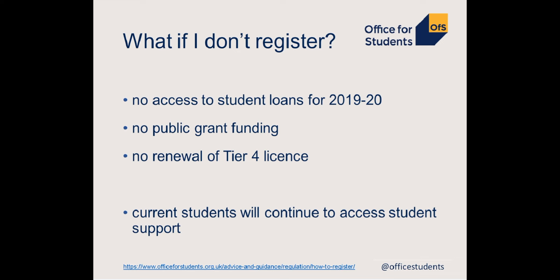What are the consequences if you choose not to register? From 2019-20, none of your students will be able to access student loans. You as a provider will not be able to access public grant funding or renew your Tier 4 licence. If you choose not to register and your students currently receive student loans, we will put in place mechanisms to allow your continuing students to access student support for the remainder of their course, but none of your new students will have access.